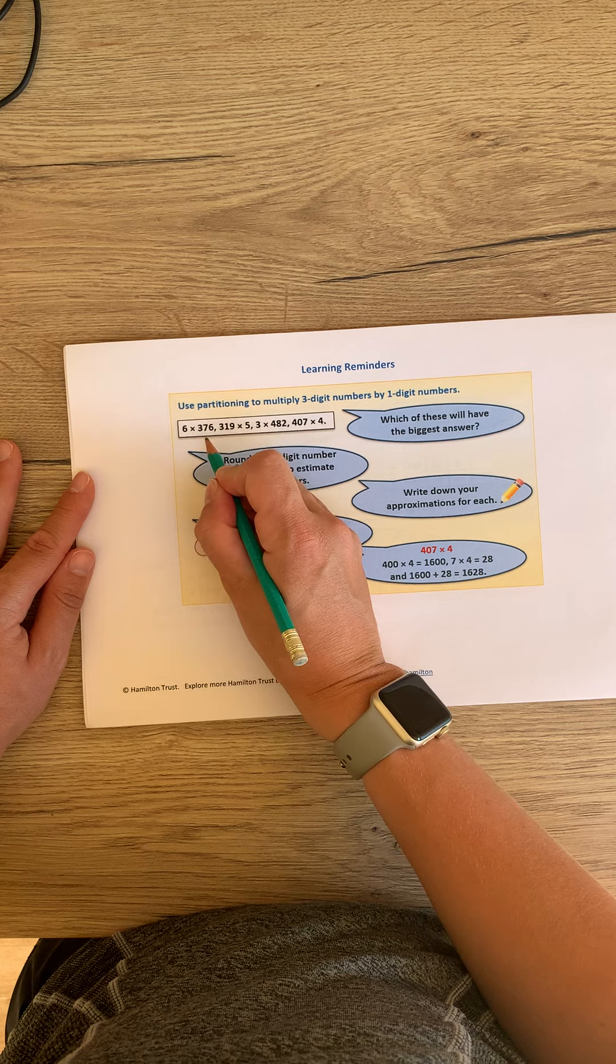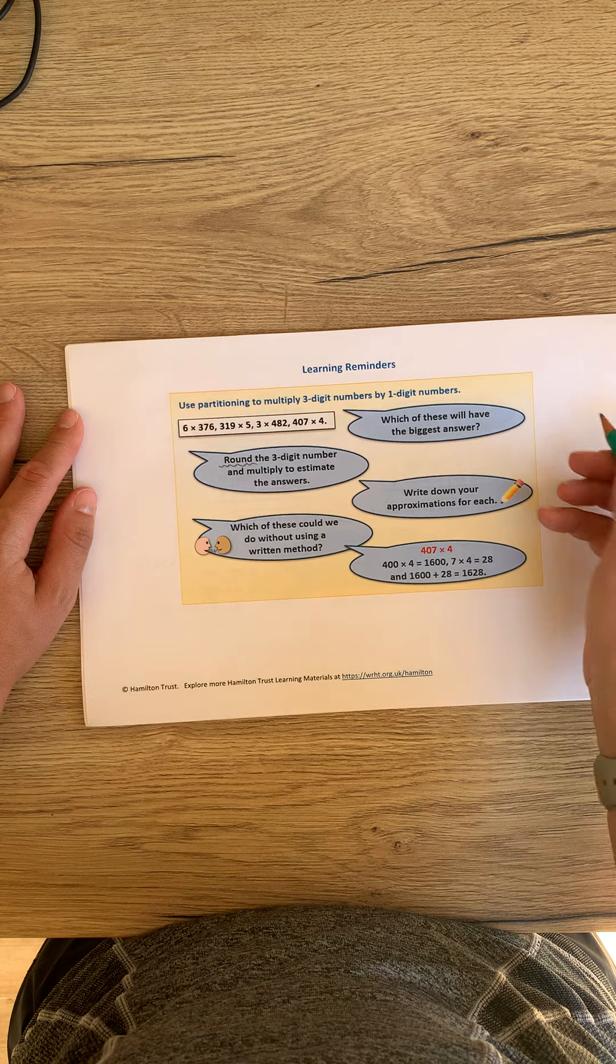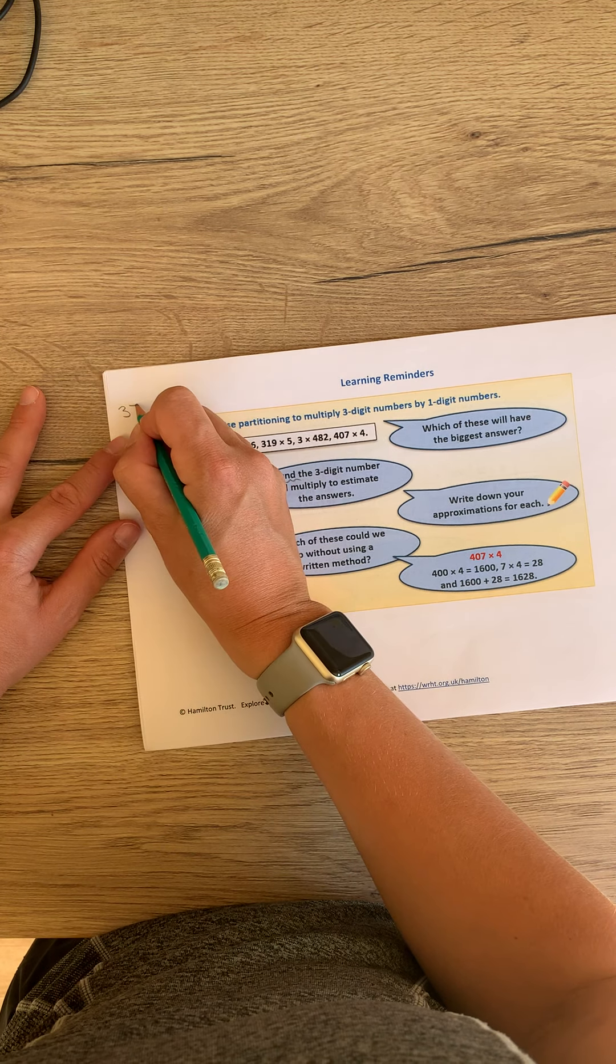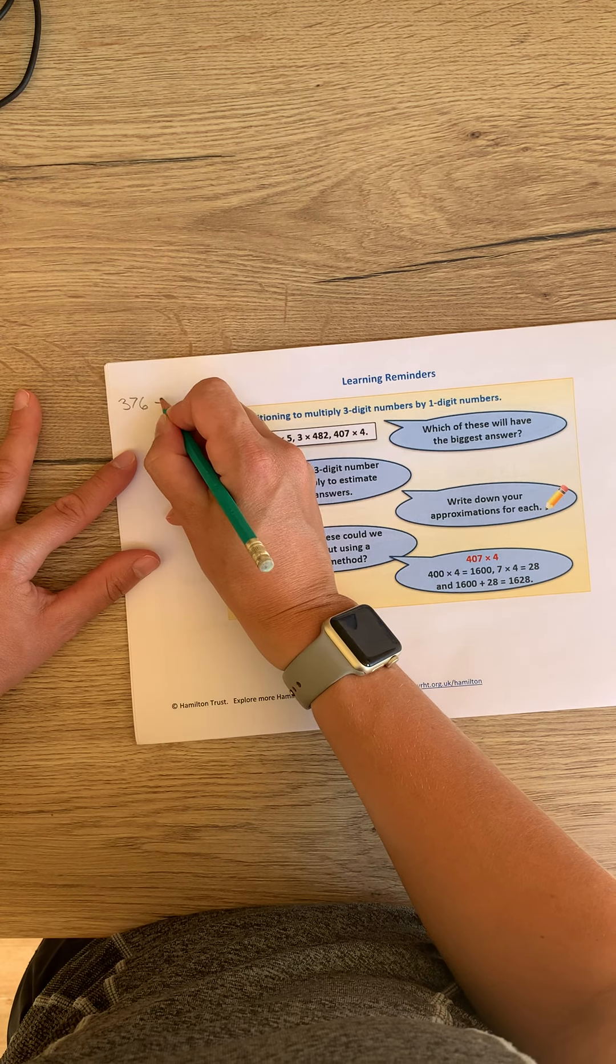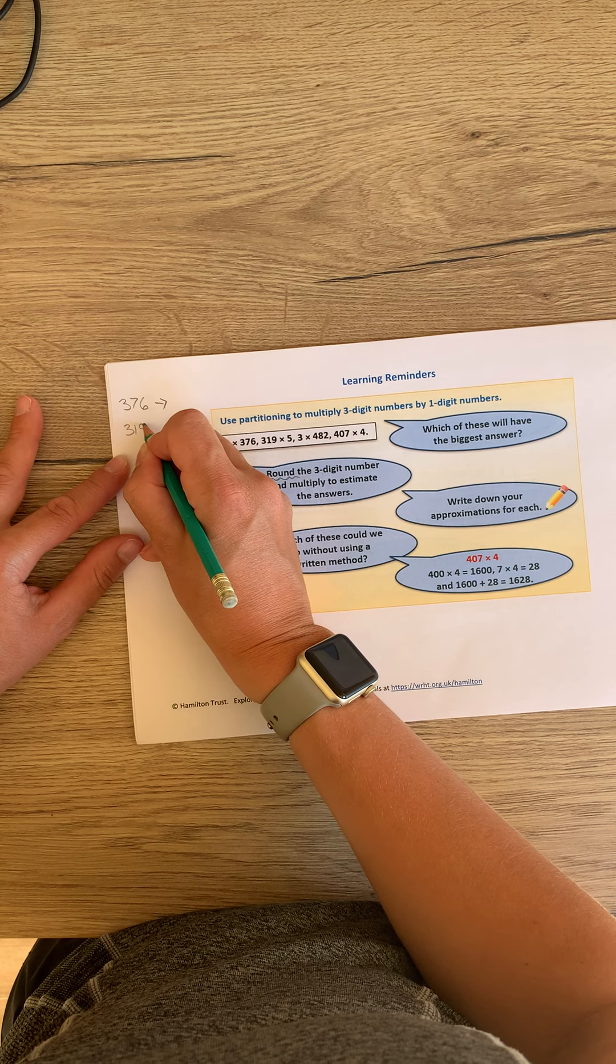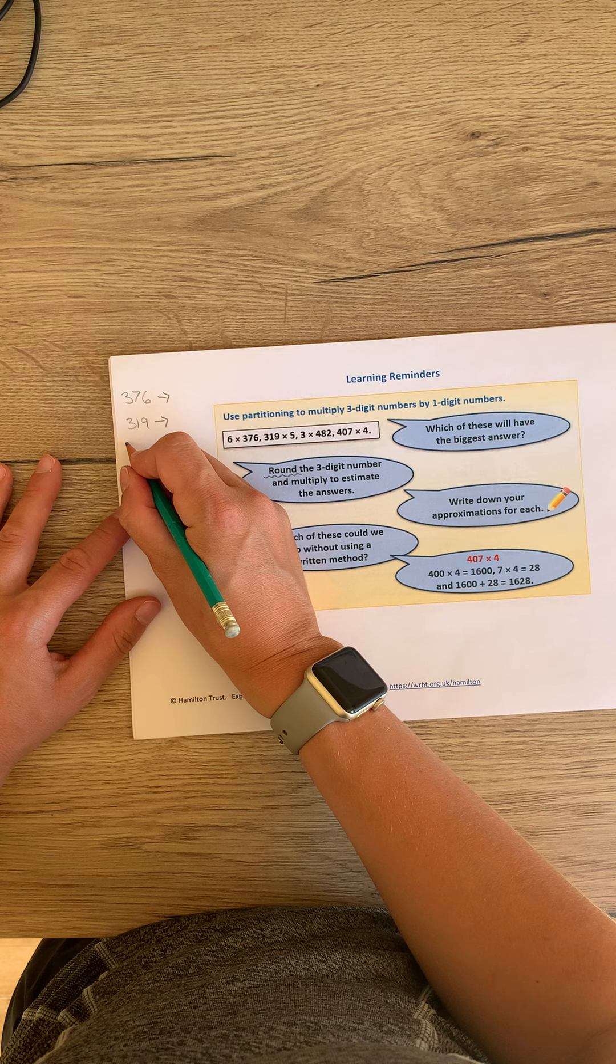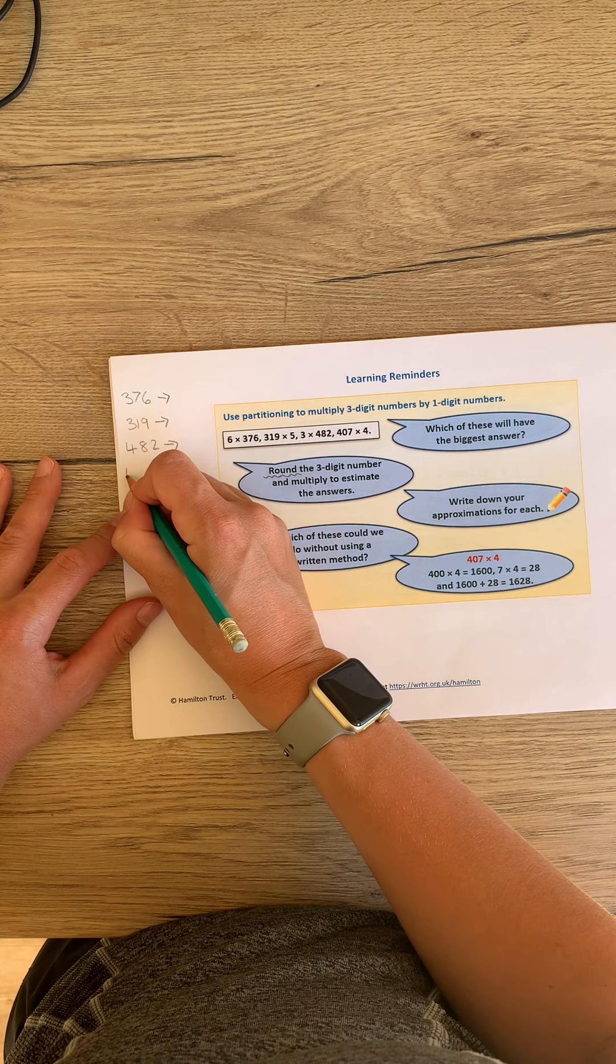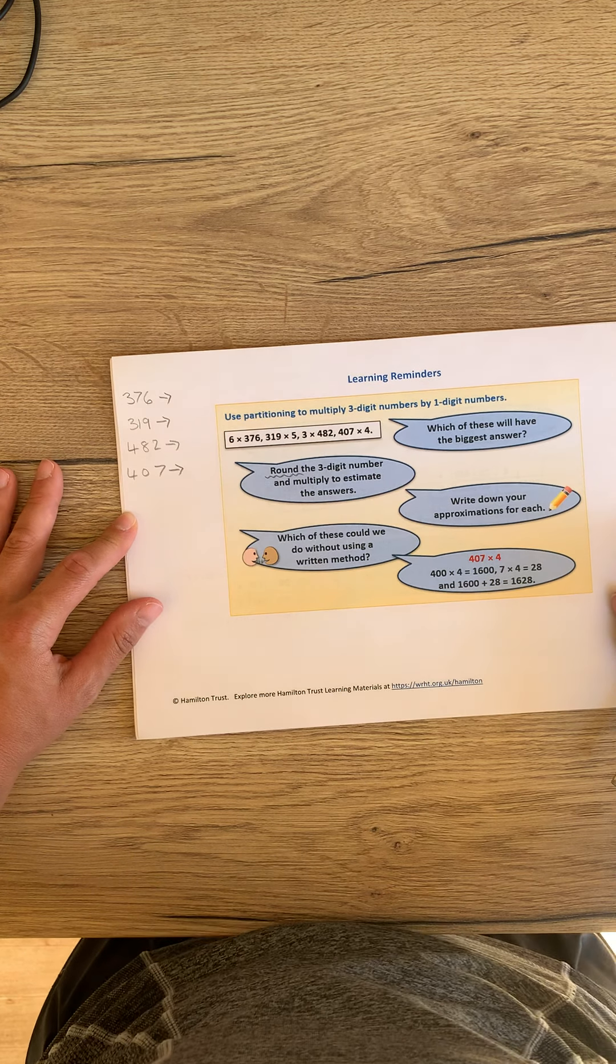Have a go, first of all, at rounding each of these three-digit numbers. I think we will go to the nearest 100. So we have 376 rounded to the nearest 100 would be, 319 rounded to the nearest 100 would be, 482 and 407. I'll give you a couple of seconds to have a think about that.